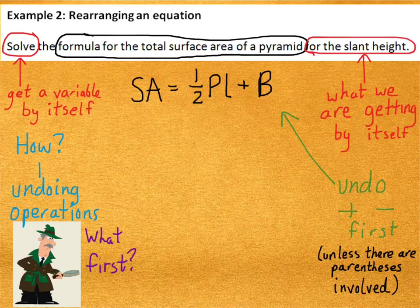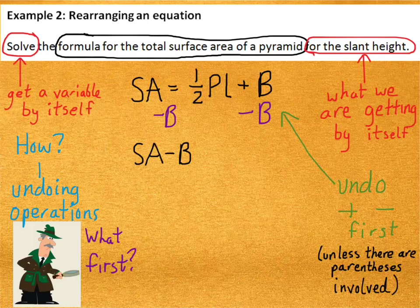Alright. So, how would I undo adding the area of the base? Well, I would subtract it. So, I'm going to do minus B on both sides of the equation. So, on the left side, I have surface area minus B. On the right side, I'd have 1/2 PL, because adding and subtracting B is going to cancel.